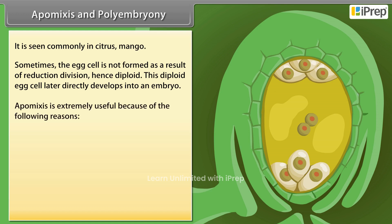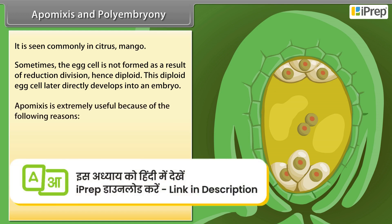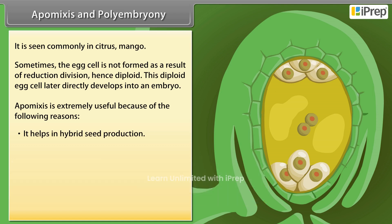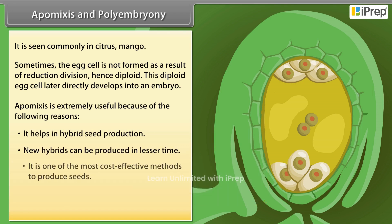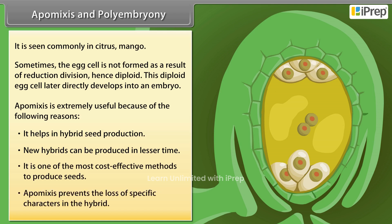Apomyxis is extremely useful because of the following reasons. It helps in hybrid seed production. New hybrids can be produced in lesser time, and it is one of the most cost-effective methods to produce seeds. Apomyxis also prevents the loss of specific characters in the hybrid.